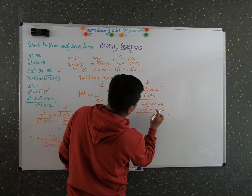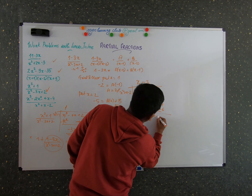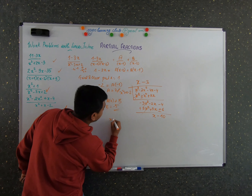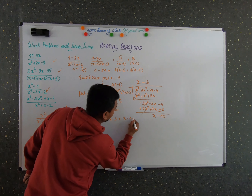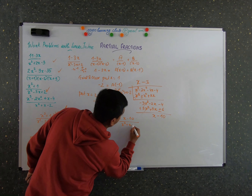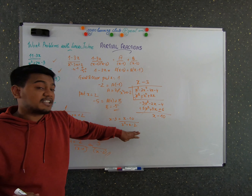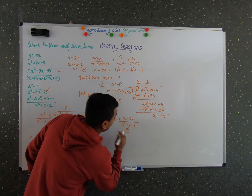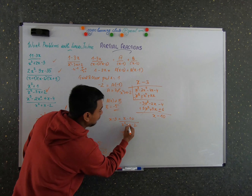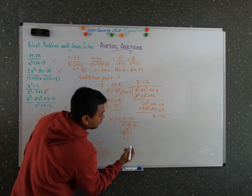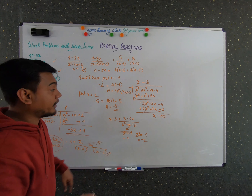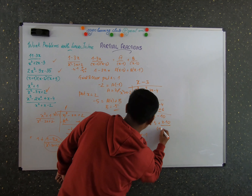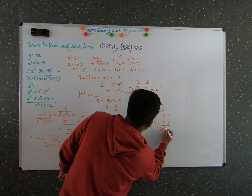After subtracting, minus 2x plus 3x gives x, and minus 4 minus 6 gives minus 10. So the remainder is x minus 10. You can now write this as x minus 3 plus (x minus 10) by (x squared plus x minus 2). Checking whether the denominator is factorisable: 2 minus 1 gives a sum of 1 and a product of minus 2, so the factors are (x plus 2)(x minus 1). Therefore: x minus 3 plus (x minus 10) by (x plus 2)(x minus 1).